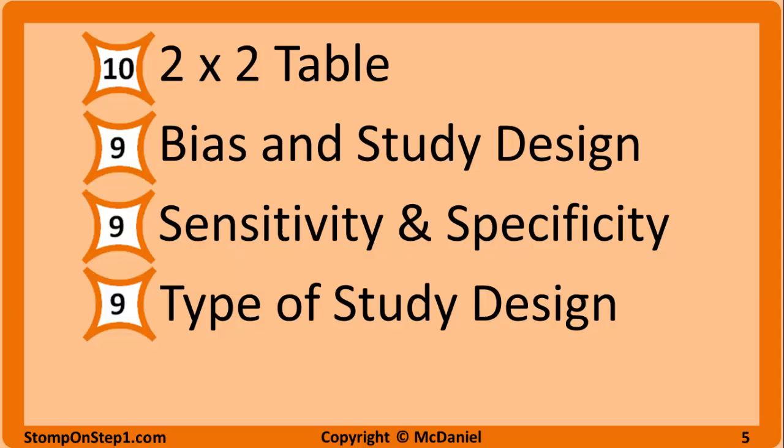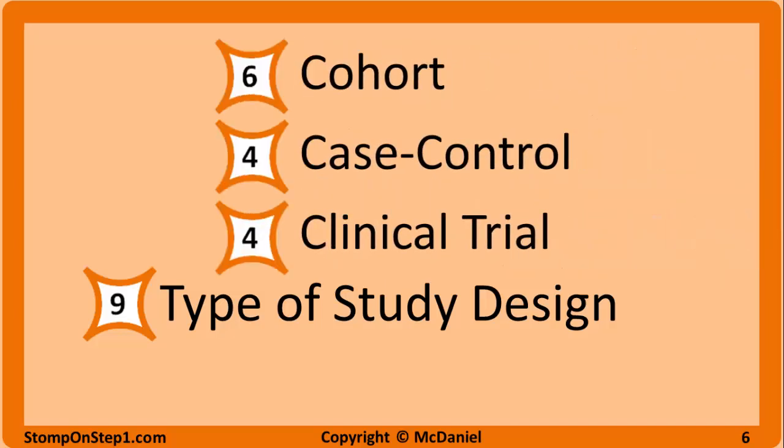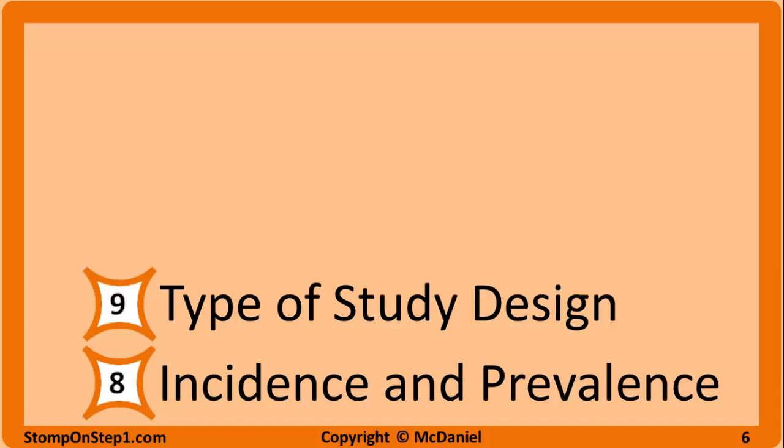Then we've got the types of study design, mainly knowing how to identify what study design you are given a description of a study. There are a lot of different study designs, but the three main ones to focus on are cohort, case-control, and clinical trials — randomized control trials. Next with a high yield rating of 8 is incidence and prevalence. You need to know the definitions, how to calculate them, how to interpret numbers given to you, the differences between the two, the relation between these two terms and duration, and when to use these measures.